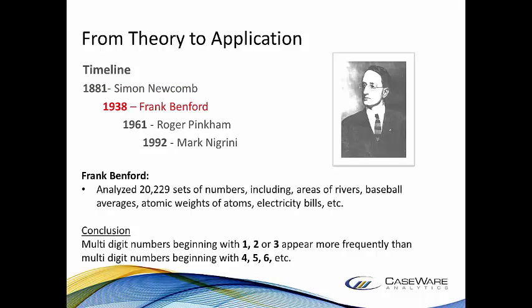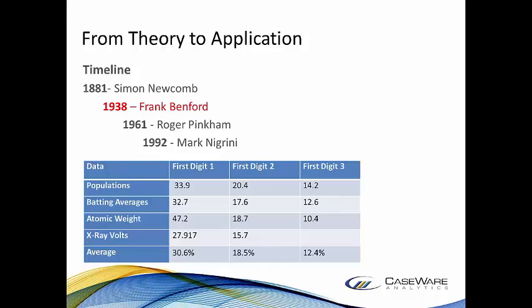This slide outlines some of the areas where Benford made his observations. The next slide shows the graphical layout of the various averages he used — from population and batting averages to atomic weight. You can see the first digit average is typically 30 percent, the second digit 18 percent, and so on and so forth.